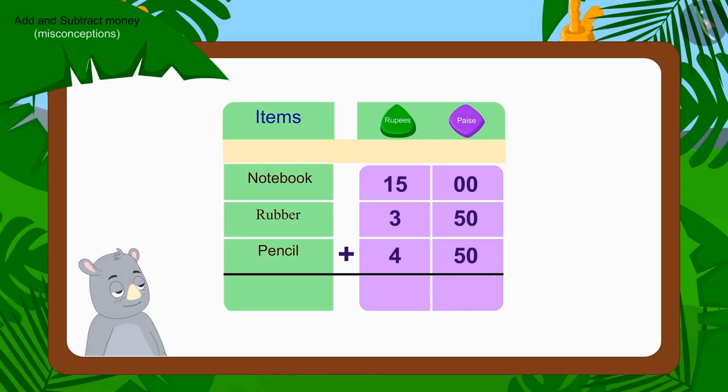Let's find this out by putting this addition together. What shall we do first? We'll add the numbers of paise. How much money do we get by adding fifty and fifty paise? Hundred paise. How do we write this?